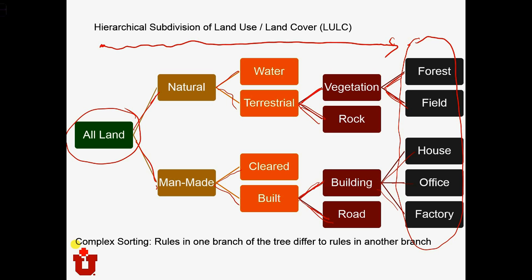This is an example of what we call complex sorting. It is complex because the rules used at each location to subdivide the tree can be different. For example, we don't use the same rules to classify natural land — such as asking whether it is water or land-based — as we use when asking whether man-made land has a building on it or is a road. The rules can differ from place to place within our subdivision tree.